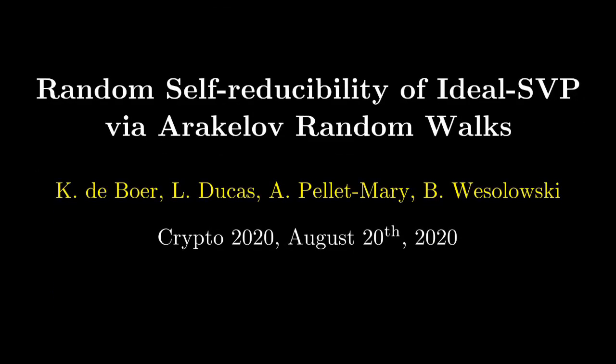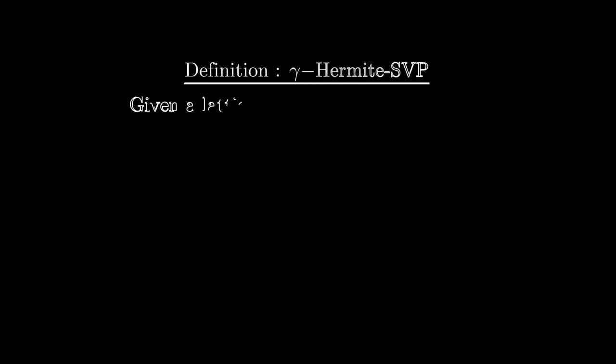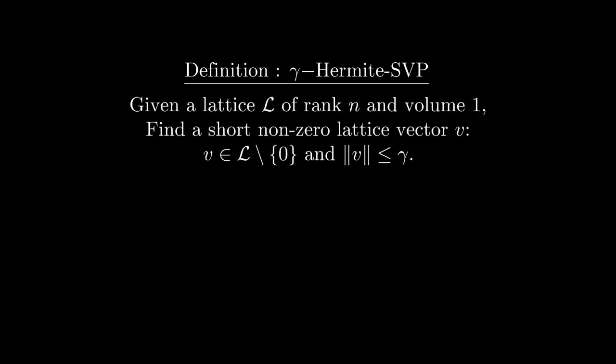This talk will be about a worst case-to-average case reduction for the shortest vector problem in ideal lattices. We do this by considering the space of all ideal lattices, which is called the Arakelov class group. In our main result we consider the Hermite shortest vector problem, instead of the ordinary shortest vector problem. In the Hermite shortest vector problem we ask for a vector that is short relative to the volume of the lattice, which is a more absolute notion. And to avoid having the volume of the lattice in the equation we just assume that the lattice has volume 1, which is also particularly nice in the context of Arakelov theory.